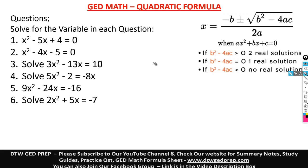This is an example of when you have the discriminant equal to 0 and you have one real solution. The GED can also pose a question asking how many real solutions a quadratic equation has. You go to the discriminant B squared minus 4AC, put in the values, and solve it. If it gives you 0 — one real solution. If greater than 0 — two real solutions. If less than 0 — no real solution.